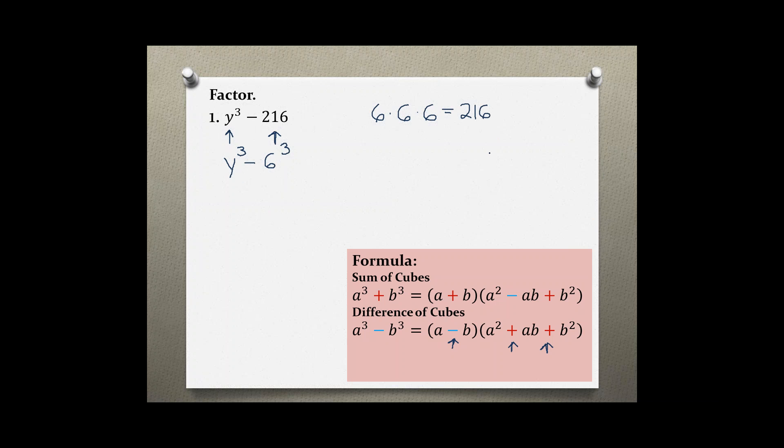You can use a calculator to find this value by doing the opposite of cubing, which means taking the cube root. The cube root of 216 is 6.